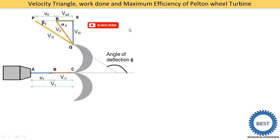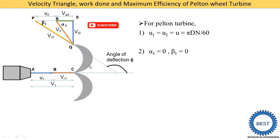For a Pelton wheel turbine: U1 equals U2 equals U equals pi*D*N/60, meaning the bucket speed is the same at inlet and outlet. Second, alpha 1 equals 0 and beta 1 equals 0, because the blade is struck in the horizontal direction — the nozzle angle is zero. At the outlet, beta 2 is at a certain angle. Since V1 is horizontal, V1 equals VW1 directly.